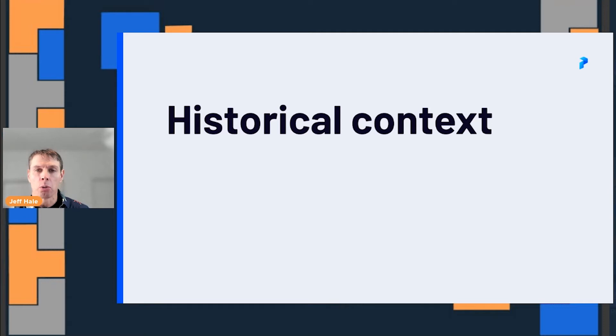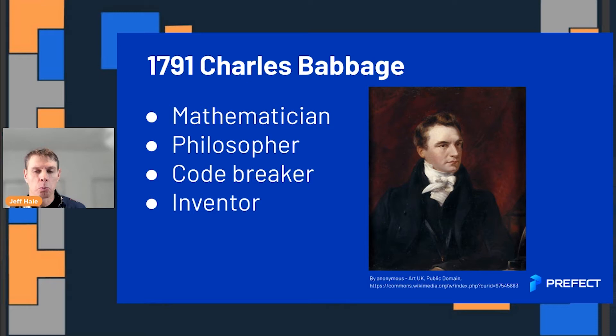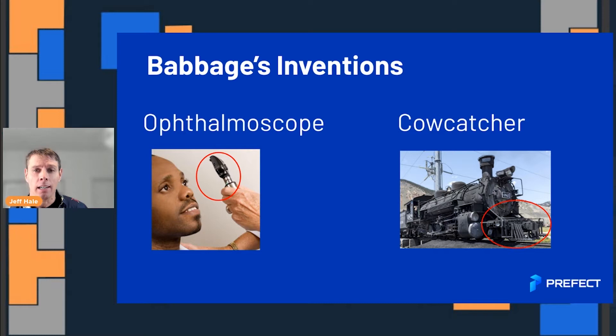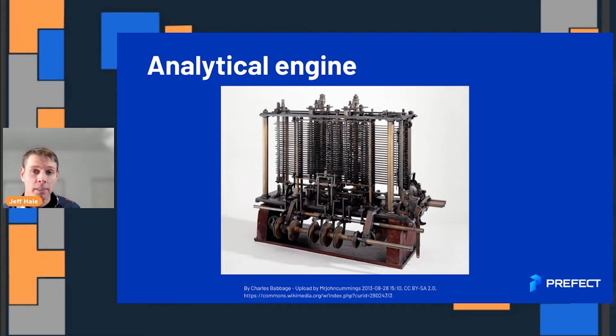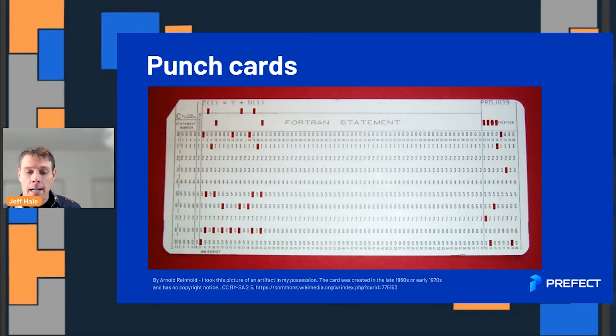Let's look at a historical context of these blocks. Way back in 1791, Charles Babbage — super smart guy, mathematician, philosopher, code breaker, inventor — actually broke some ciphers during the Crimean War. He invented the ophthalmoscope and the cowcatcher. A lot of these things didn't actually get built in his lifetime, but he did a lot of design work. He designed a difference engine and then an analytical engine, which is often thought of as the first computer. Never totally built, but he designed what was the first plan for a computer.